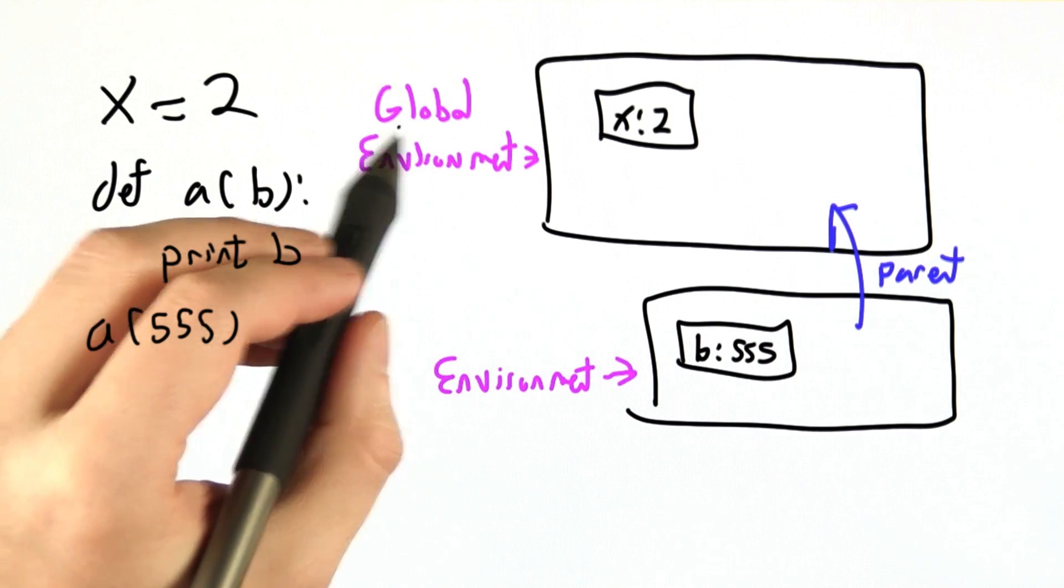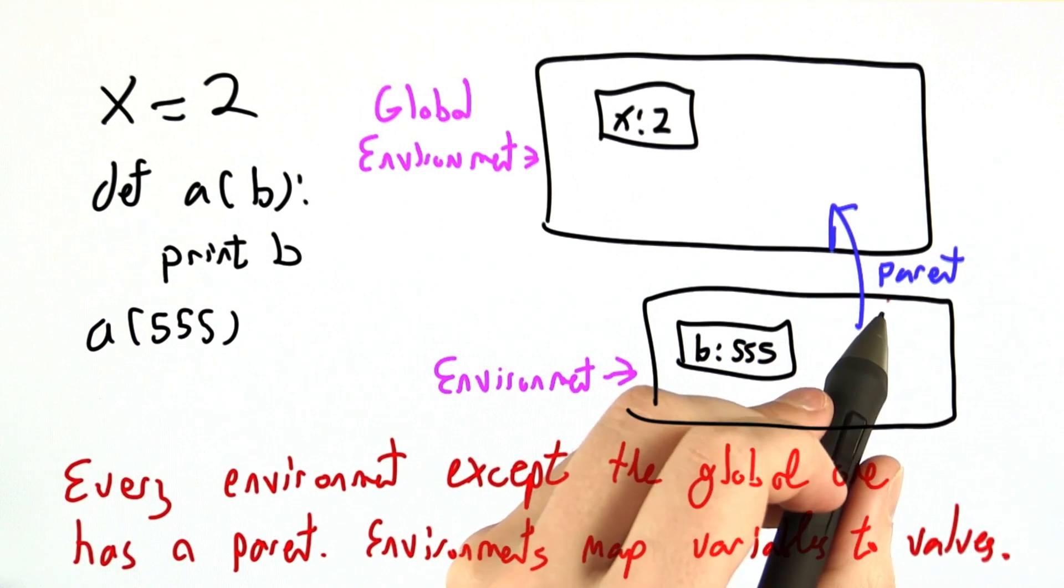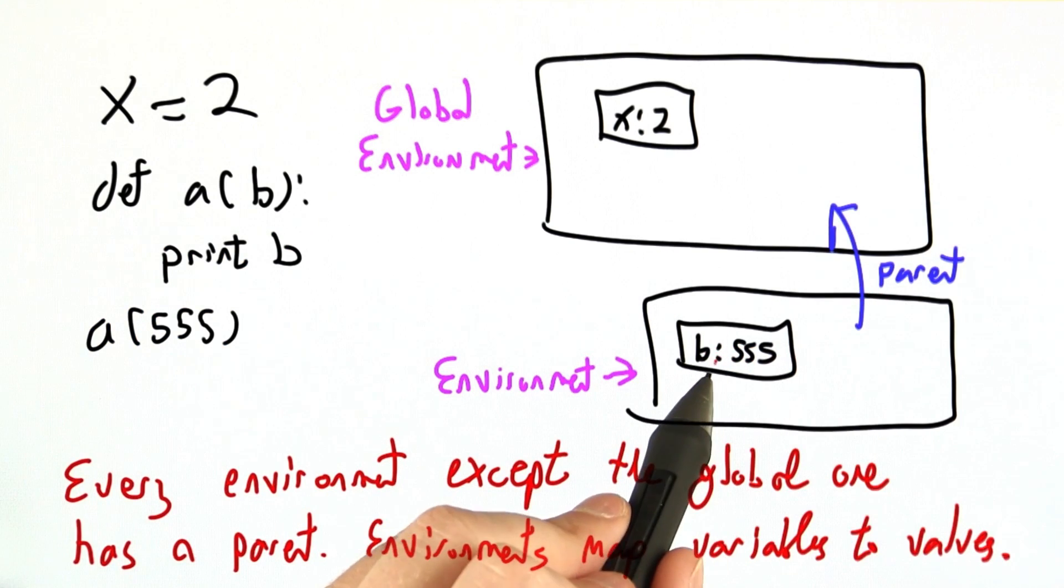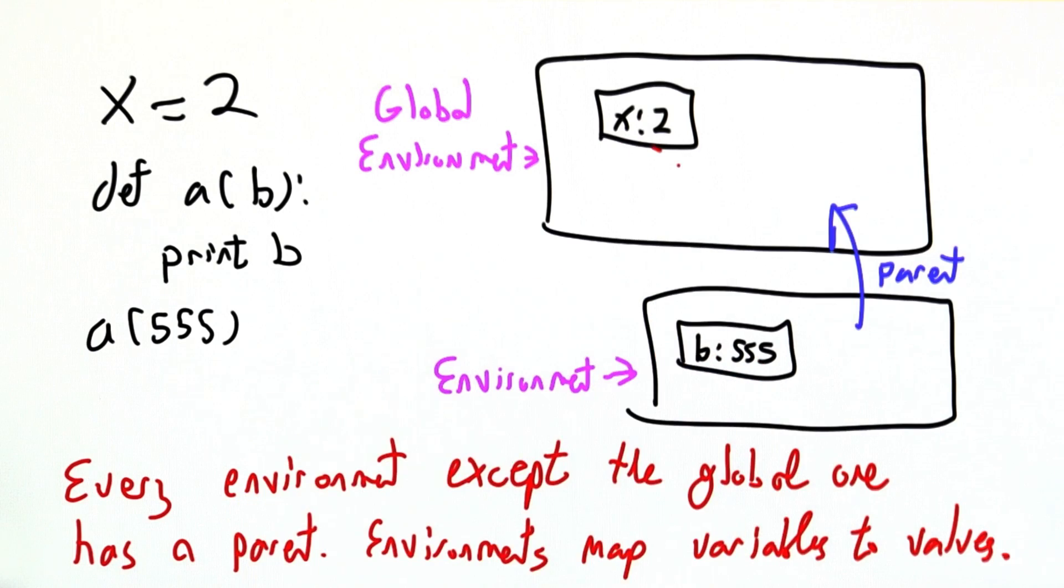Every environment that's not the global one has a parent. Beyond having a parent pointer, environments just map variables to values. B is 555, x is 2.